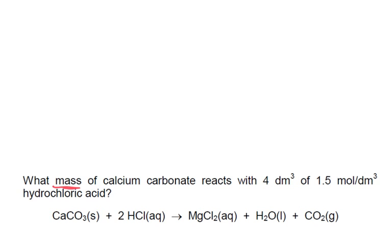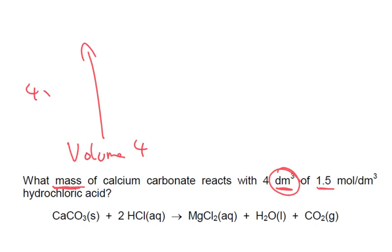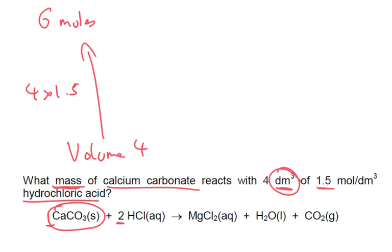Problem 2: What mass of calcium carbonate reacts with 4 decimetres cubed of 1.5 moles per decimetre cubed hydrochloric acid? We start with volume. This time we don't need to convert — they've given it to us already as 4 decimetres cubed. So 4 times by 1.5 gives us 6 moles of HCl. The ratio of HCl to calcium carbonate is 2 to 1, so we do 6 times by 1/2, giving us 3 moles of calcium carbonate.